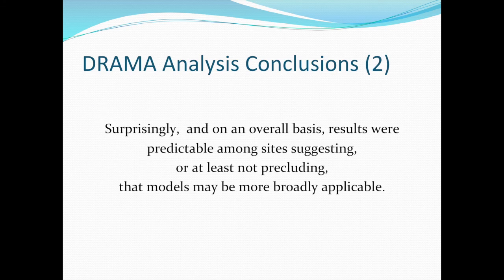Surprisingly — and this is surprising because I went into this project very skeptically — on an overall basis, results were predictable among sites, suggesting, or at least not precluding, that models may be more broadly applicable. That is a really good news story, because what we want to do moving forward is take more data, hopefully with standardized toxicity and non-toxicity variables, and apply this over a broad geographic scale — doing what is already implicit in Tier 1 guidelines: taking a number and broadly applying it over a wide geographic range.